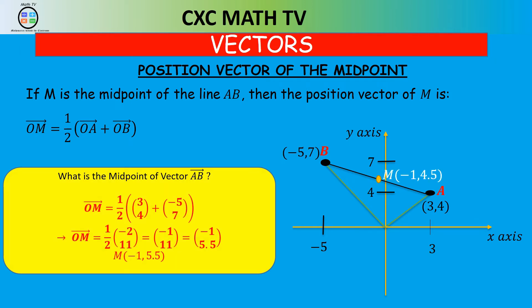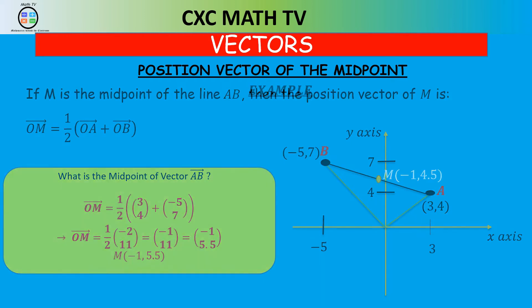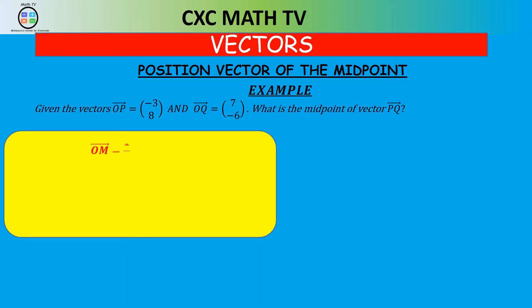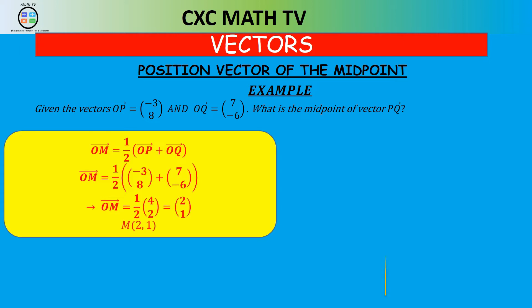Here's an example for you to try. Given OP = (−3, 8) and OQ = (7, −6), what is the midpoint of vector PQ? Pause the video and attempt. Vector OM = ½(OP + OQ) = ½((−3, 8) + (7, −6)) = ½(4, 2). A half of 4 is 2 and a half of 2 is 1, so the midpoint is (2, 1).